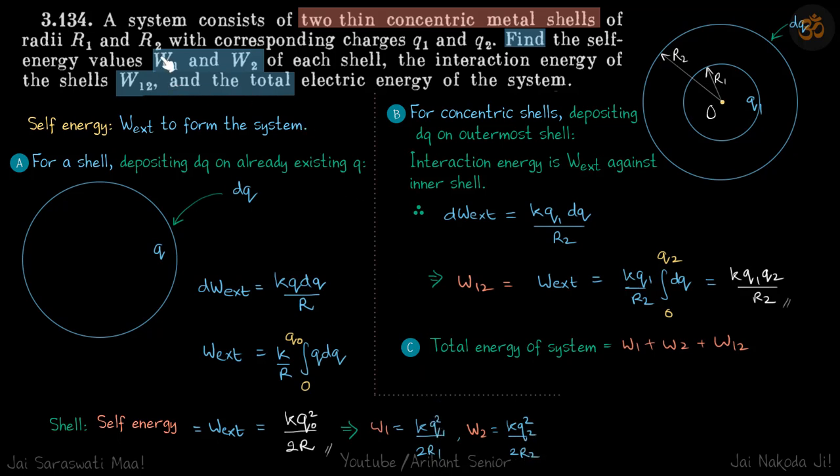Now we have found the self-energies of each shell, and now it is time to calculate the interaction energy of the two shells. So to calculate interaction energy, we fix one of the charges, then we slowly form, slowly build up the other system, and then find what is the work done to build that other system.